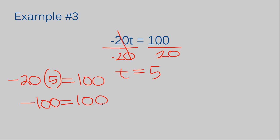Negative 20 times 5 is negative 100, but the right side is positive 100. There's a problem — there must have been an issue with my negative somewhere. I divided by negative 20 on the left side, so I should have divided by negative 20 on the right side as well. That's where I made my mistake: I should have gotten negative 5, not 5. Negative 20 times negative 5 equals positive 100, which matches the right side. So the answer to example three is actually T equals negative 5. Plugging your answer back in is always a smart thing to do.